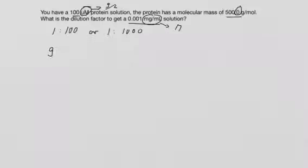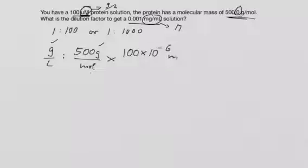So we can use our trusted dimensional analysis. We want to have the unit gram per liter and we have grams here. So we have 500 gram per mole. The grams are in the right place. We just have to get rid of the moles and we have moles hidden in the micromolar. So we can write this as 100 times 10 to the minus 6 mole per liter.